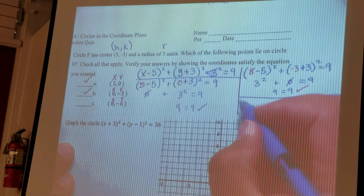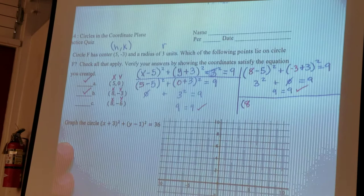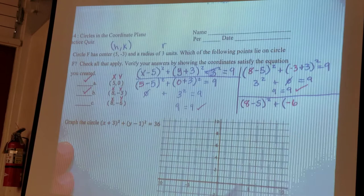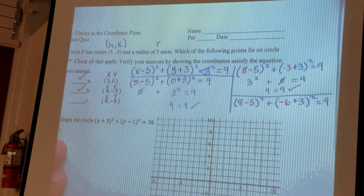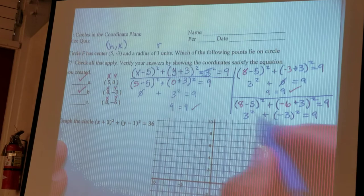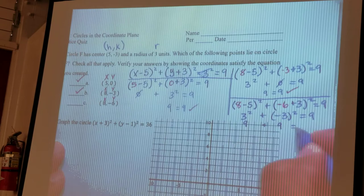Then we can test our last one. Might have to write a little small for this one. 8 minus 5 squared plus... And then I'm plugging in my negative 6 now for Y. Negative 6 plus 3 squared equals 9. So, from here, I solve this out. And this becomes 3 squared plus negative 3 squared equals 9. But 3 squared is the same as 9. Negative 3 squared is the same as 9.